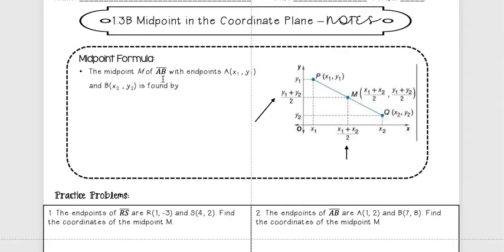The midpoint M of AB with endpoints A(x1, y1) and point B(x2, y2) is found by taking the average of both. Add the x's together and divide by 2, then add the y's together and divide by 2. This is the formula we use to find our midpoint.